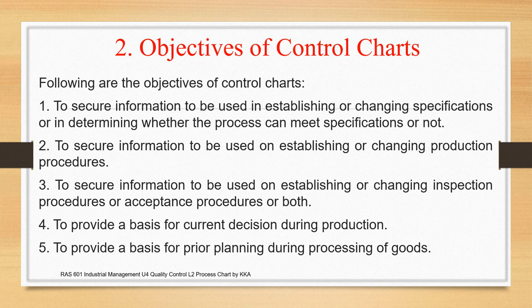The objectives of Control Charts are: to secure information about establishing or changing the specification, or determining whether the process can meet specifications. Another objective is to secure information to be used in establishing or changing the production procedure, as well as the inspection procedure. The two general objectives Control Chart serves are Prior Planning and Decision Making. This tool is universally accepted for Planning as well as Decision Making.